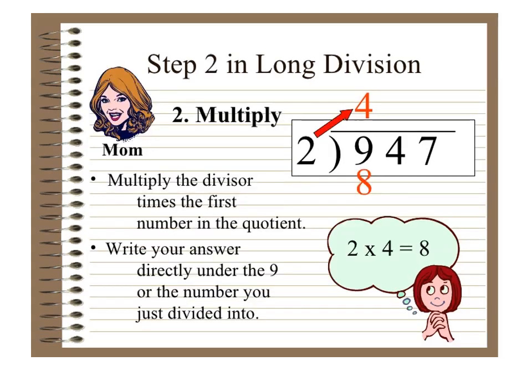Now you have to multiply. You multiply the divisor, which is 2, times the first number in the quotient, which is 4. So 2 times 4 equals 8. Then you write the answer directly under the 9, the number you just divided into.